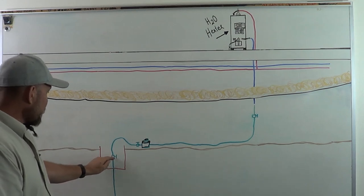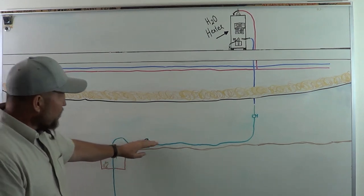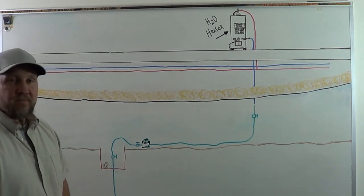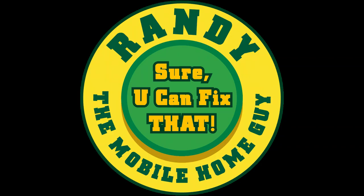So shutoffs are most often in the pit, right after the pit, before the meter runs along the ground somewhere, and into the home there will be a shutoff right there. I hope that helps. All right.